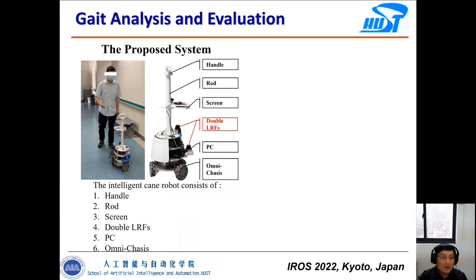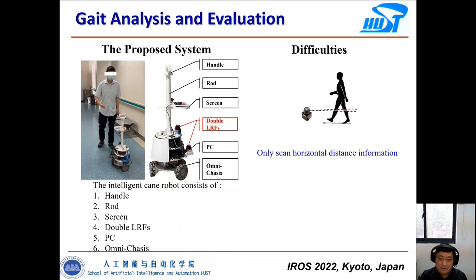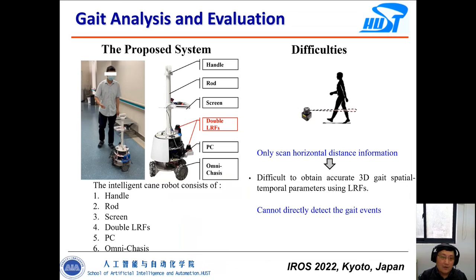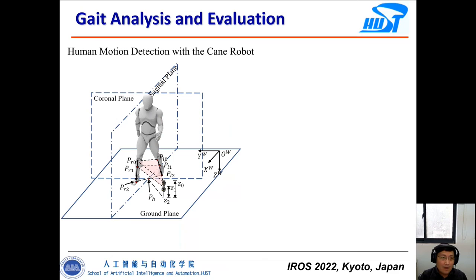In this study, we used two laser range finders in our cane robot, because gait parameters cannot be calculated from only one laser range finder. Even with two, there are difficulties: only horizontal distance information is scanned, making it hard to obtain accurate three-dimensional gait parameters, and gait events cannot be directly detected from the laser range finder alone.